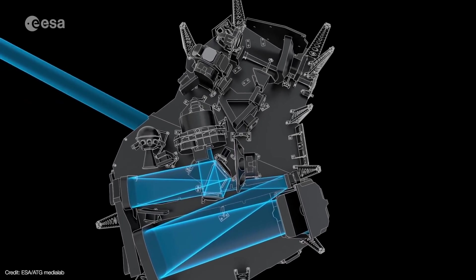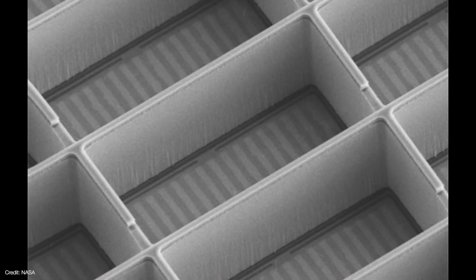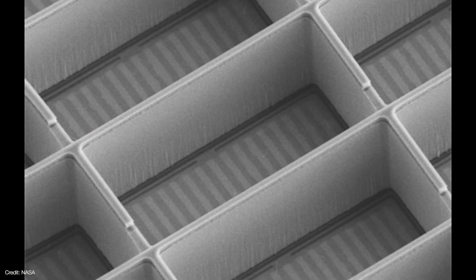As it's entering the spectrograph, the image reaches an array of tiny windows called micro shutters. Each shutter is only 100 by 200 microns. That's about the thickness of only a few human hairs.